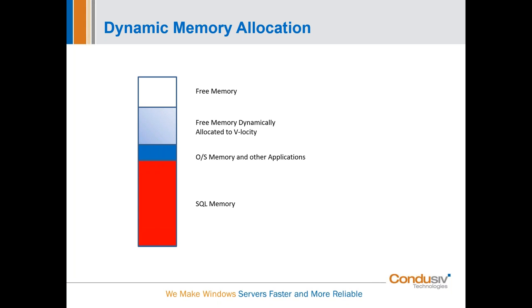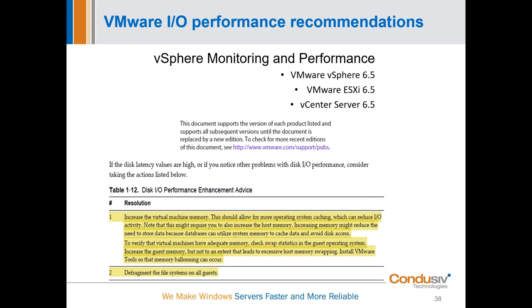This is actually from VMware's own documentation on disk IO performance enhancements. They suggest two things. First: increase virtual machine memory so the operating system can cache more — the point being, offload as much read traffic as you can to be served directly from memory on the VM, getting that IO out of the ecosystem without consuming resources making the round trip. That's what our DRAM read caching IntelliMemory does. Second: defragment the file systems on all guests. No one's going to defragment today, but they're acknowledging that fragmentation in the Windows operating system is still a problem. That's where IntelliWrite comes in — don't let the egg break in the first place, just get a clean write out the gate.